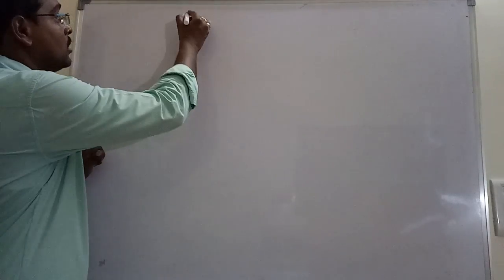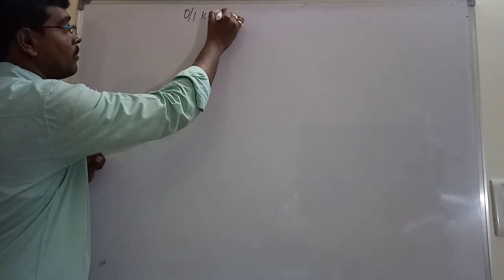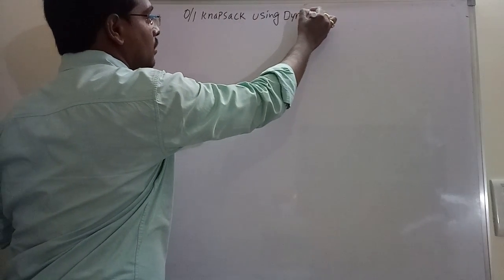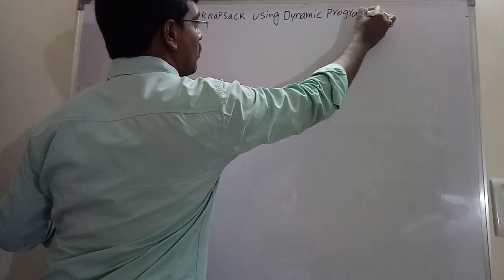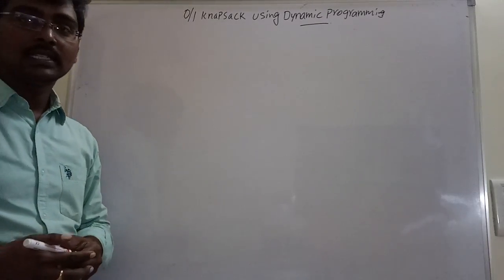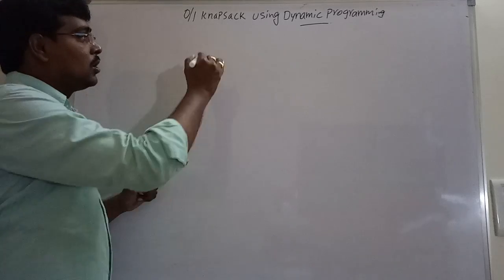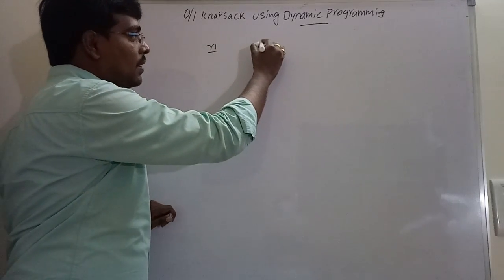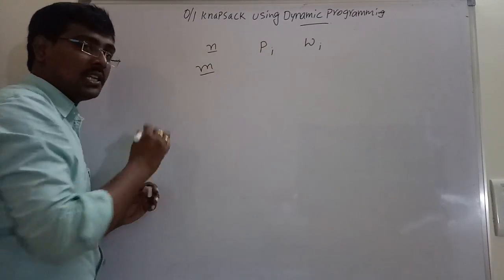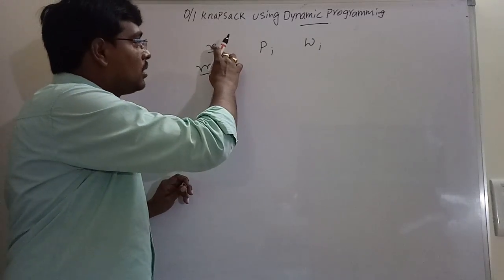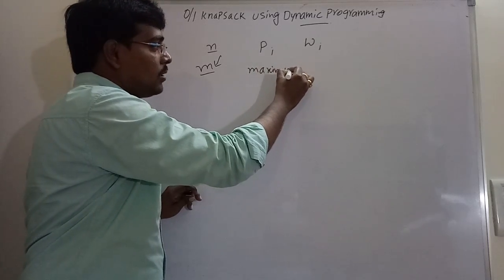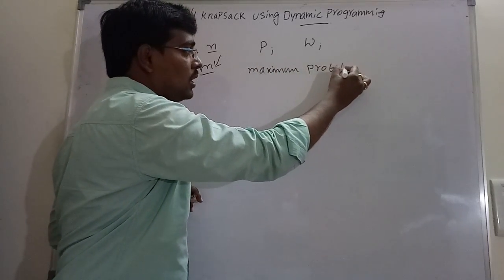Today's topic is the 0/1 knapsack problem using dynamic programming. The knapsack problem is: we have N number of objects, each object having a profit Pi and weight Wi, and a knapsack of capacity M. Our objective is to place these objects into the knapsack to get maximum profit.